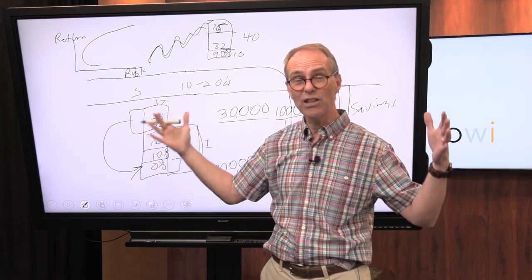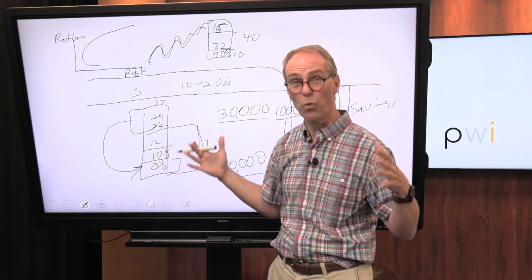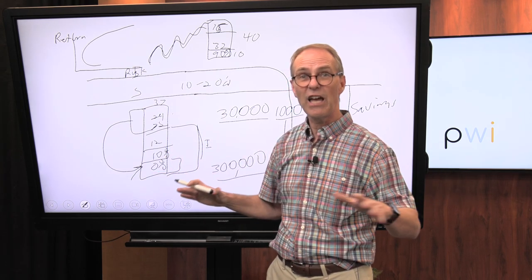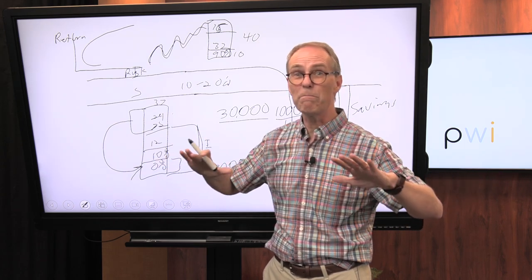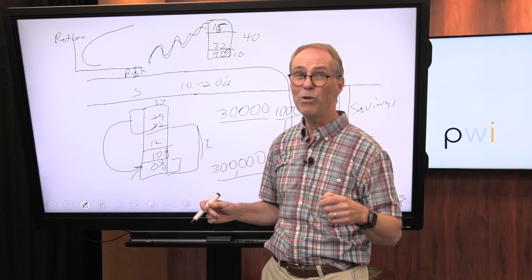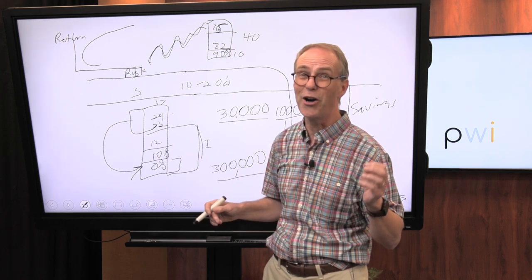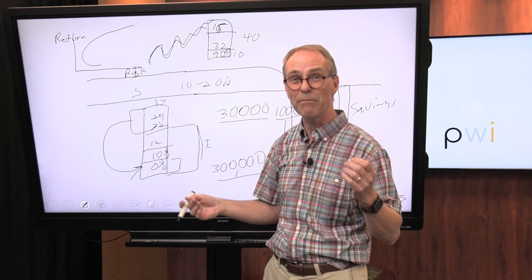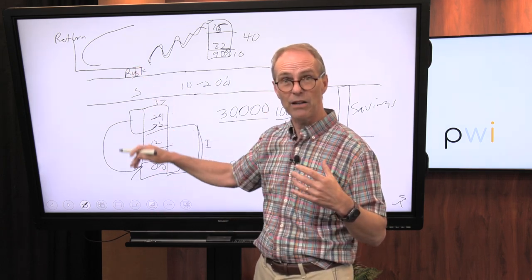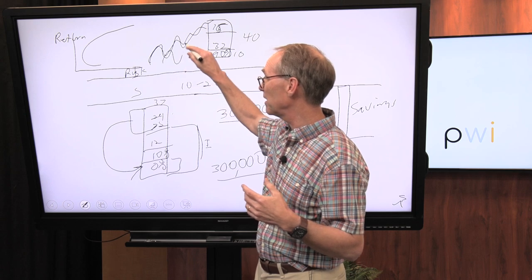That would mean all those 30,000 companies have gone broke or bankrupt simultaneously. Well, if that happens, we probably have bigger problems on our hands. So that's not what I'm talking about when I talk about risk.